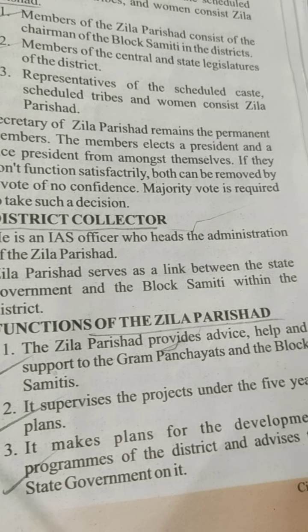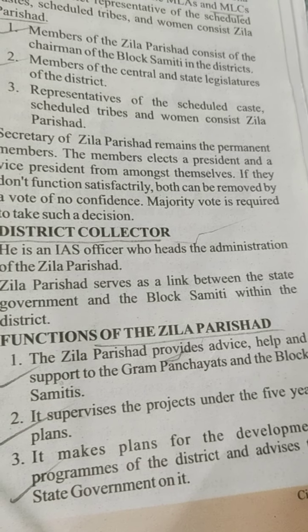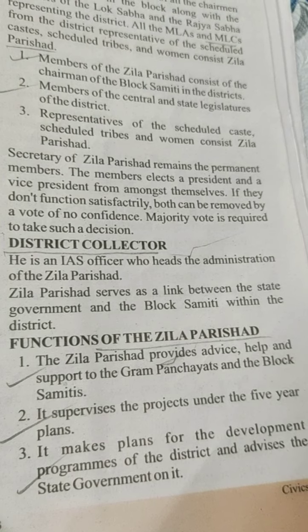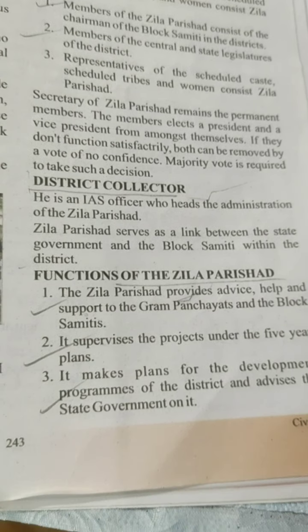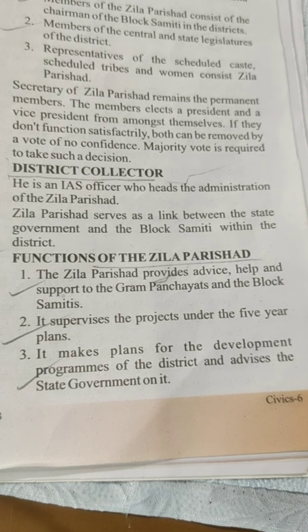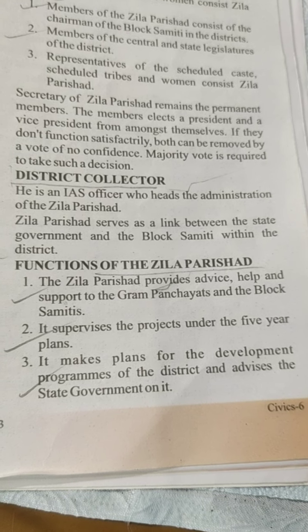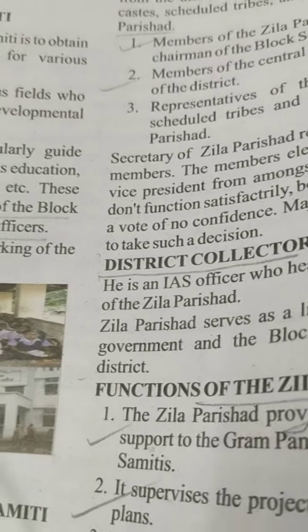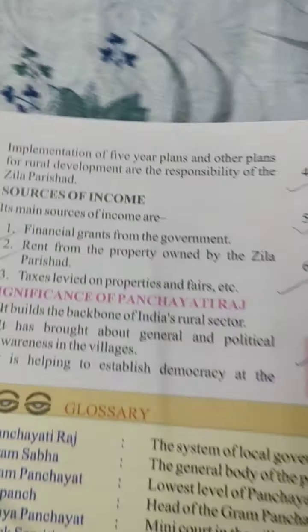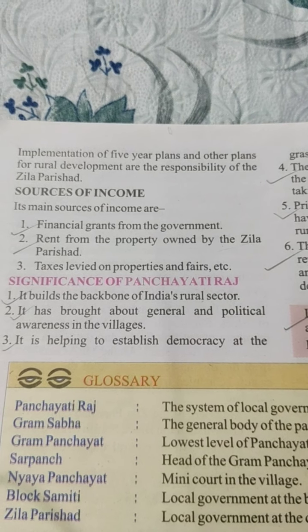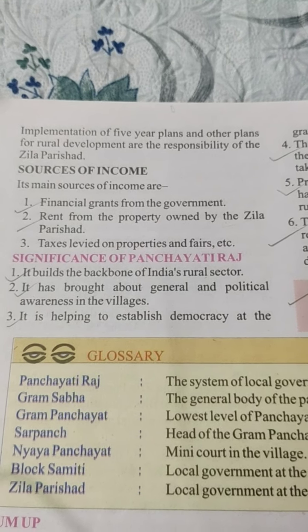Functions of the Jilla Parishad: 1. The Jilla Parishad provides advice, help and support to the Gram Panchayats and the Block Samitis. 2. It supervises the projects under the five-year plans. 3. It makes plans for the development programs of the district and advises the state government on it. Implementation of five-year plans and other plans for rural development are also the responsibility of the Jilla Parishad.